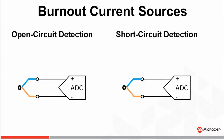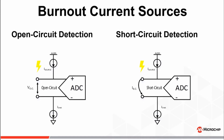Here we illustrate the use of the burnout current sources for fault detection in sensors such as a remotely connected thermocouple. Since thermocouples are sensors which require no external excitation voltage, such as you would see with a strain gauge, detection of open and/or short circuit conditions is fairly simple, as all it requires is the activation of the burnout current sources on the VIN-plus and VIN-minus inputs. In the case of an open circuit, when enabled, the I-source DAC will pull the VIN-plus input to AVDD and the I-sink DAC will pull the VIN-minus input down to ground.